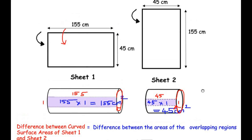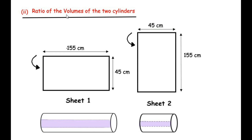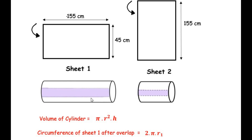Now let us look at the second sub-question: find the ratio of the volumes of the two cylinders formed, using π = 22/7. The volume of a cylinder formula is πr²h, where r is the radius and h is the height of the cylinder. We need to find the radius and height of both cylinders. To find the radius of the first cylinder, we use the circumference of the circle formula: circumference = 2πr.